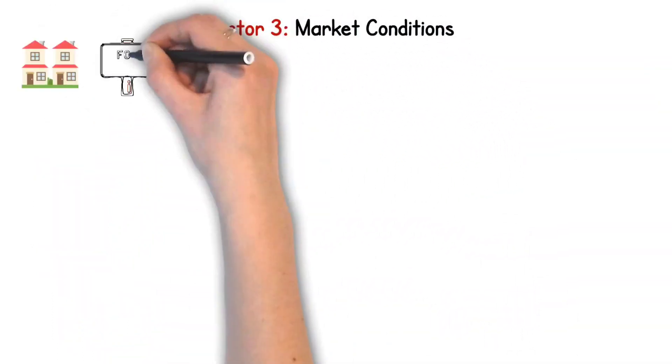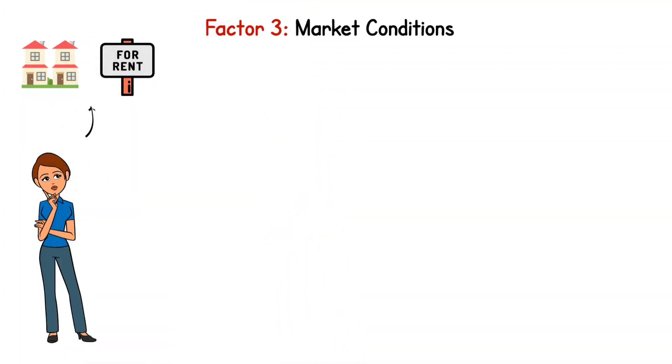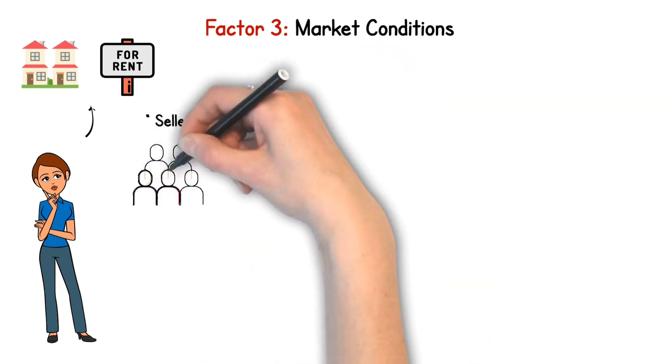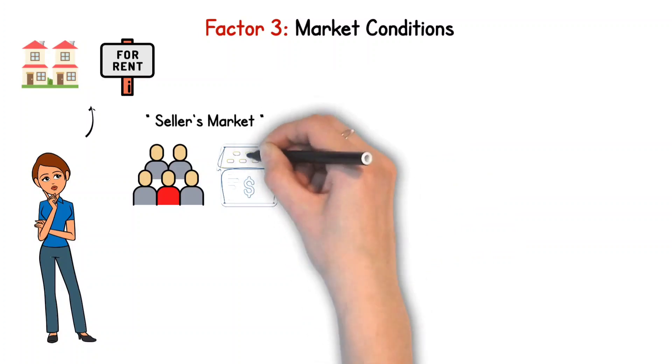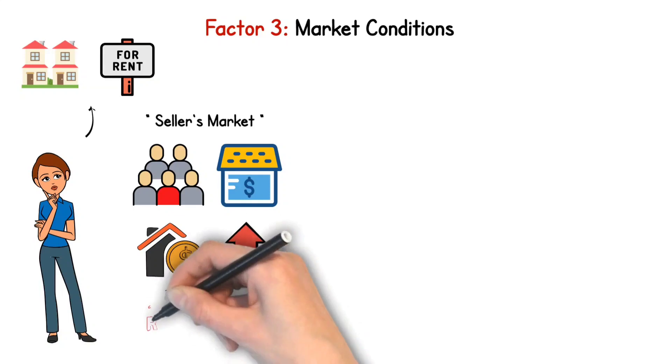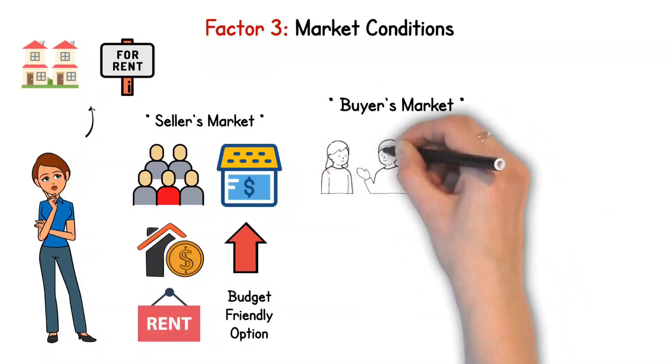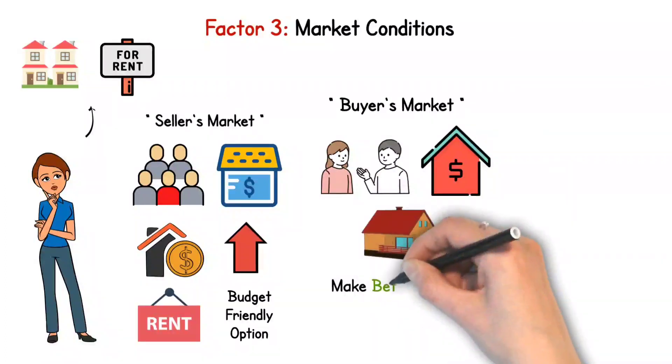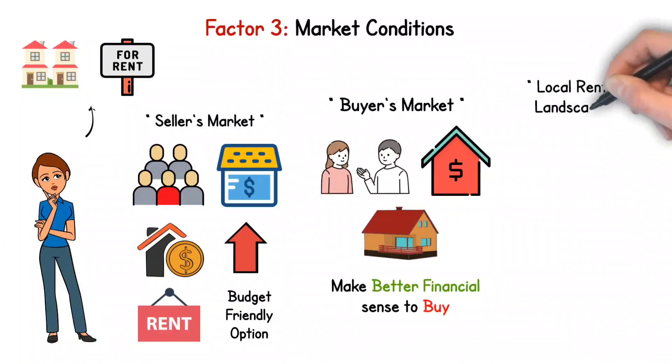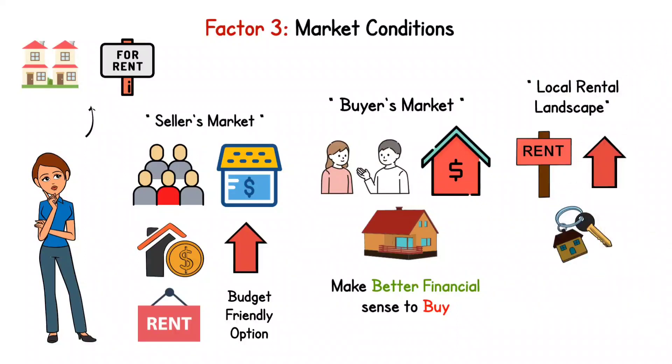Factor 3. Market Conditions. The nature of the housing and rental scene where you're looking to live can greatly influence your choice. Imagine, for instance, landing in a hot seller's market. This is where potential homeowners far outnumber the houses up for grabs. The competition can send the price of buying a house through the roof, which might tilt the scales in favor of renting as a more budget-friendly option. Conversely, in a buyer's market blessed with a glut of homes for sale, it might make better financial sense to buy. The local rental landscape plays a crucial role too. In those buzzing cities where rent is steadily climbing, buying could end up being the more economical choice, especially if you're planning to stick around for a good few years.